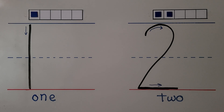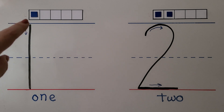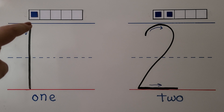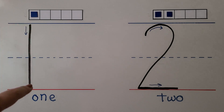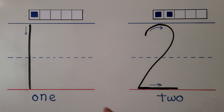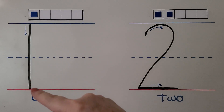We can trace the number 1 with our finger. Can you do it in the air with my finger? We start up here and draw a line coming down. We start at the top and come straight down. We can use the other hand if that's the hand you use — start at the top and come straight down.